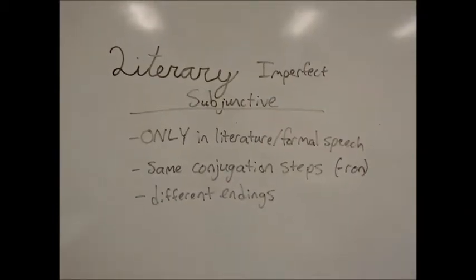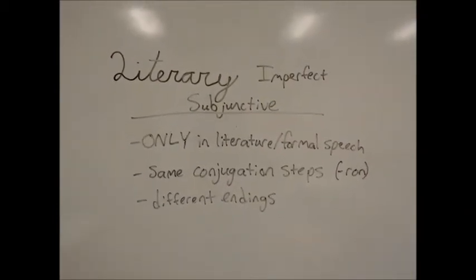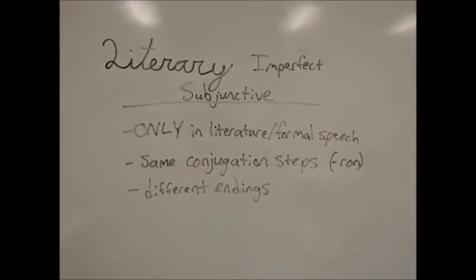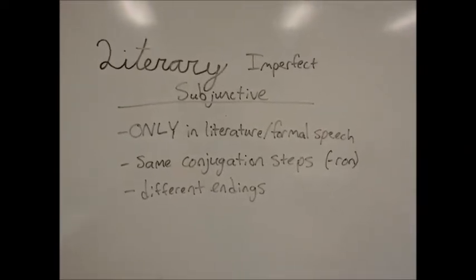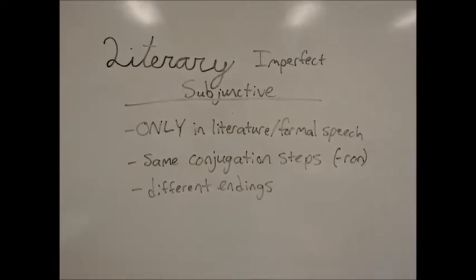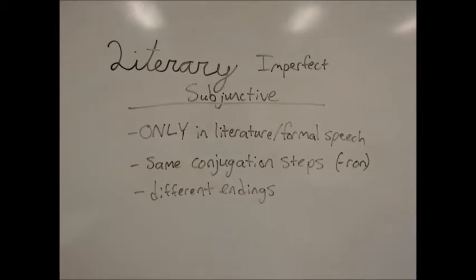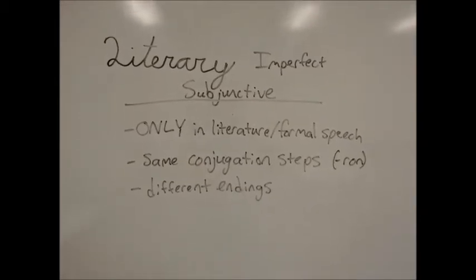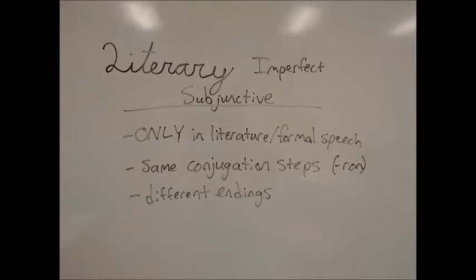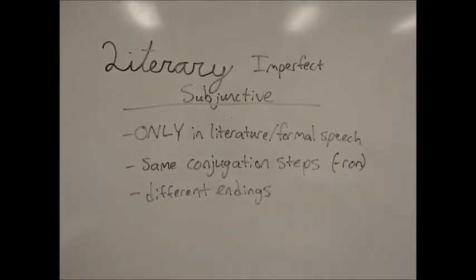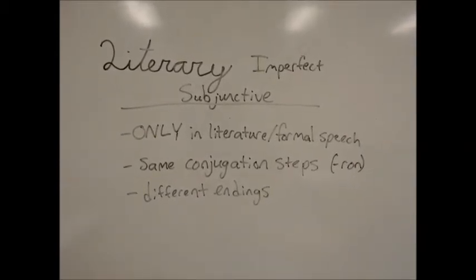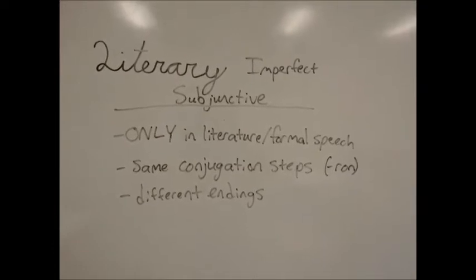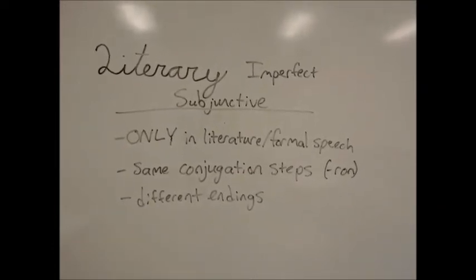Conjugating verbs in the Literary Imperfect Subjunctive is very similar to conjugating verbs in the regular Imperfect Subjunctive. But in the regular Imperfect Subjunctive, we conjugate in the Ellas, Ellos, Ustedes form and take off the ON. In the Literary Imperfect Subjunctive, we take the R also, so you take off the RON at the end of the word.